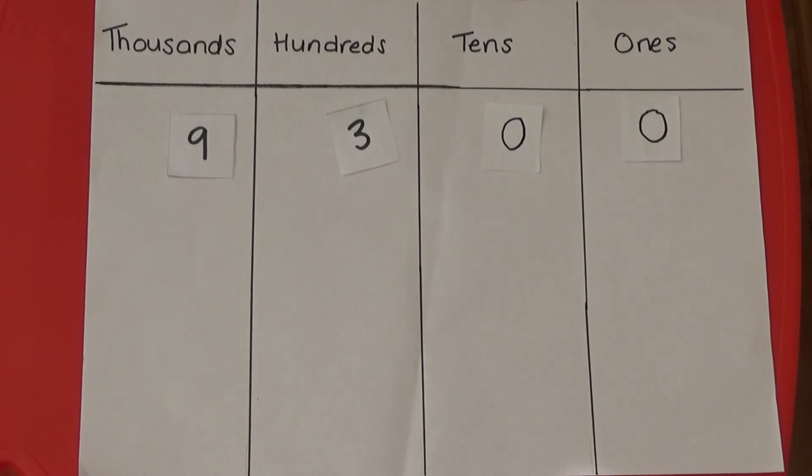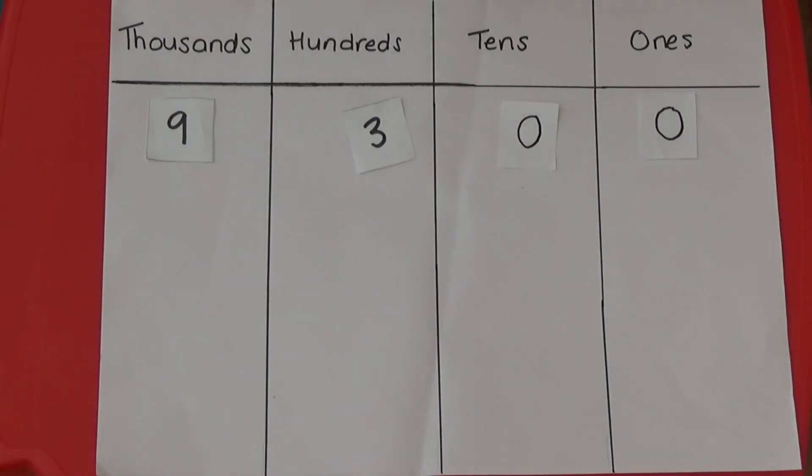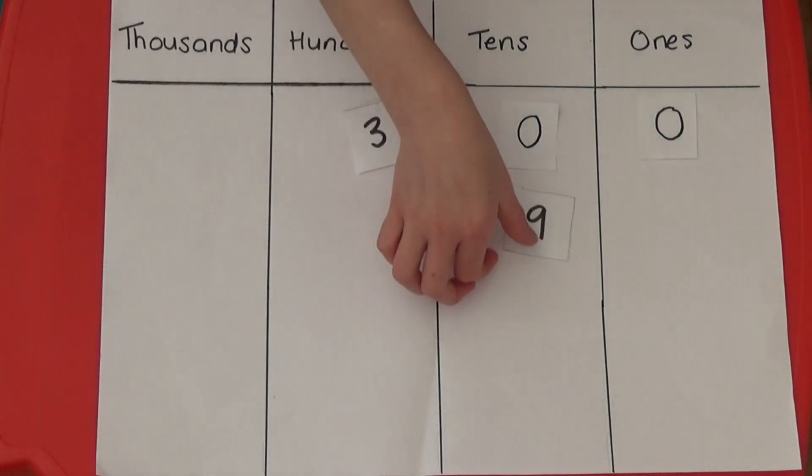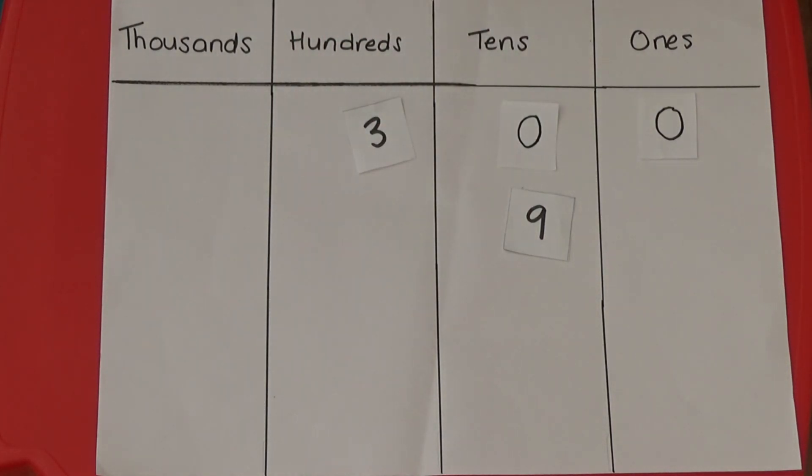We already know that each column to the right is 10 times smaller, so two columns to the right are 100 times smaller. So when we divide 9300 by 100, the 9000s move two columns to the right to become 90 or 9 tens. And the 300s move two columns to the right to become 3 ones. And then we need to remove both zeros.